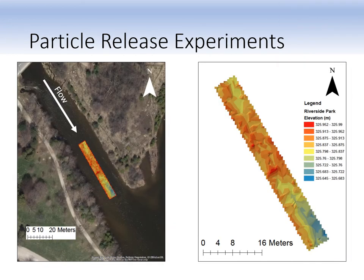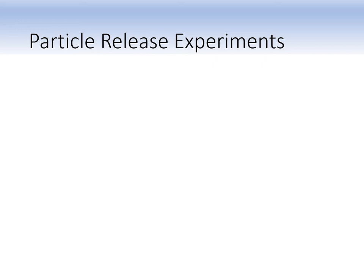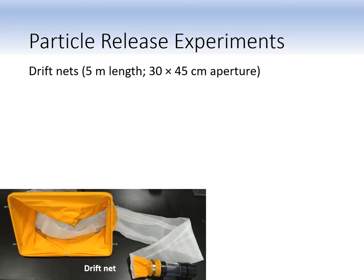After confirming the microbeads were not toxic and that they readily degrade in the field, we were able to conduct our first particle release experiments. We chose to perform these experiments at the Speed River, which is another local river. For later use in our modelling, we also collected riverbed elevation data at a 50cm x 50cm resolution. The colours in each of these elevation maps indicate high elevations in red and low elevations in blue. We designed custom drift nets and sedimentation traps with some important design considerations in mind.